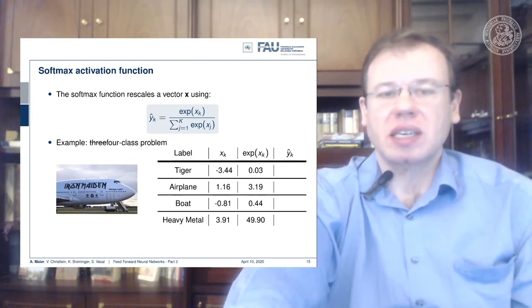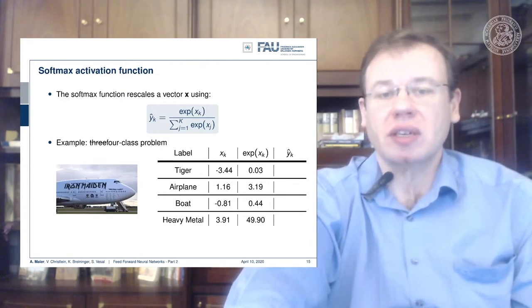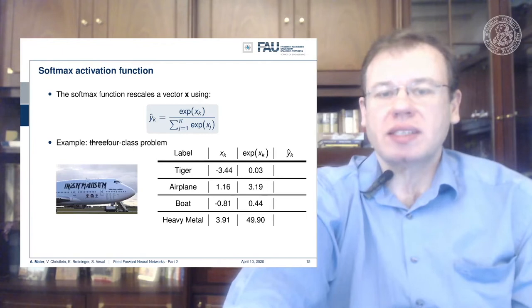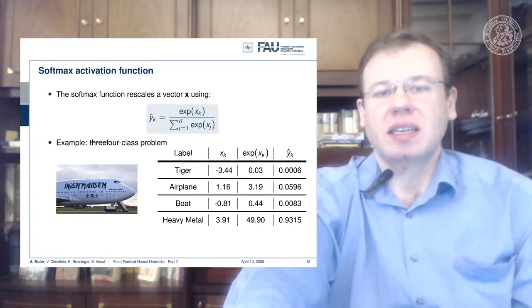This is not so great, so let's use the exponential function. Now everything is mapped into positive numbers and there's quite a difference between the numbers, so we need to rescale them.